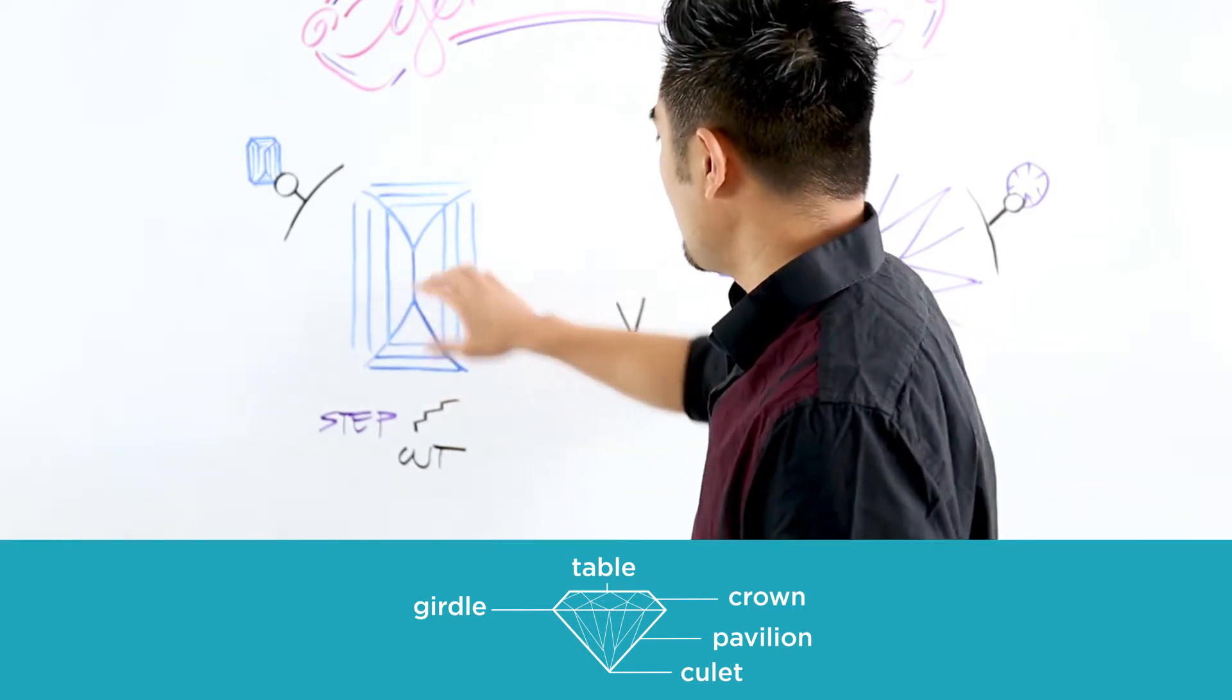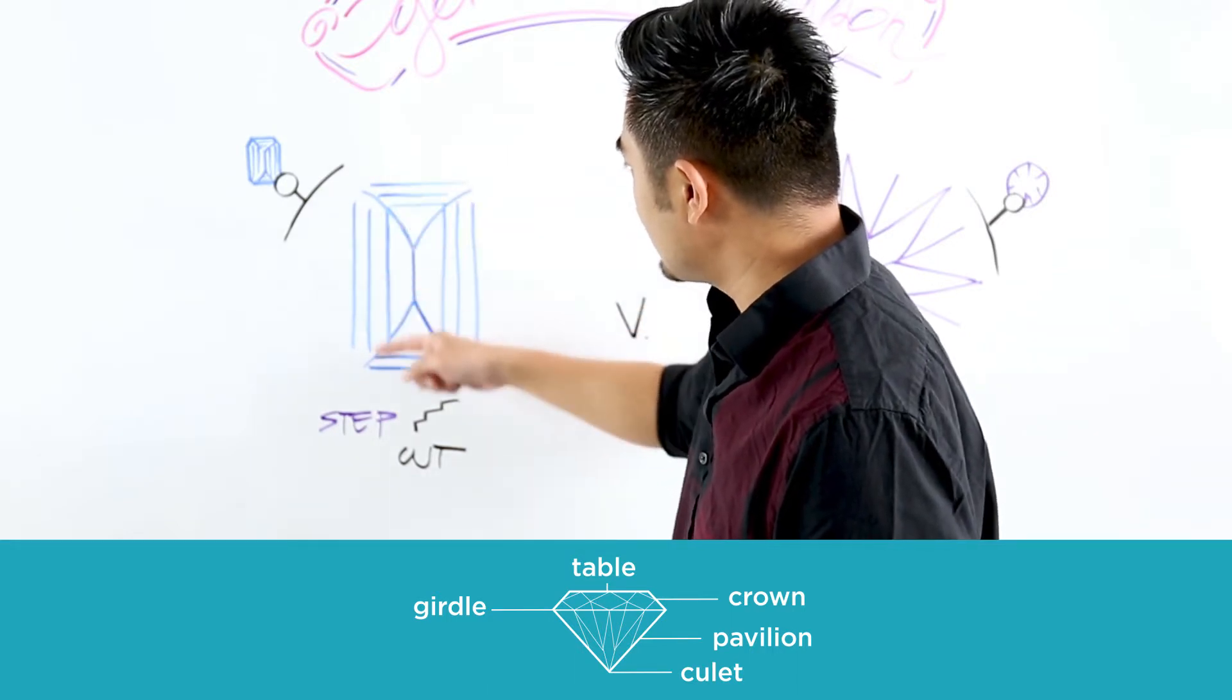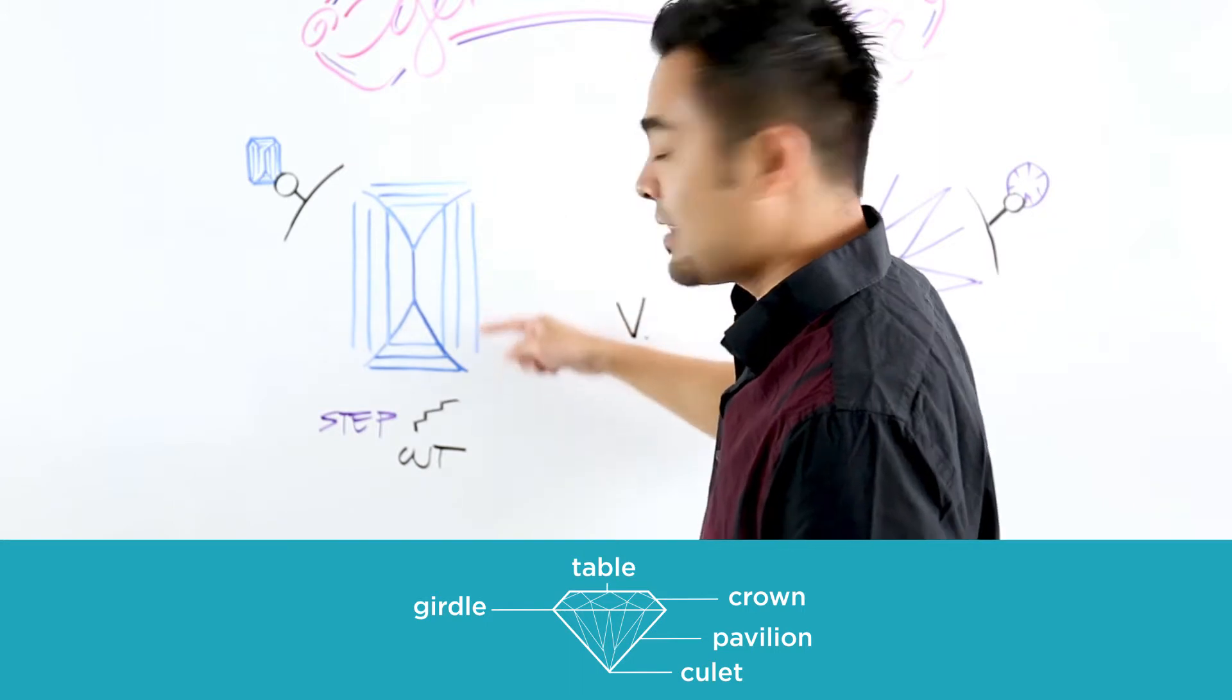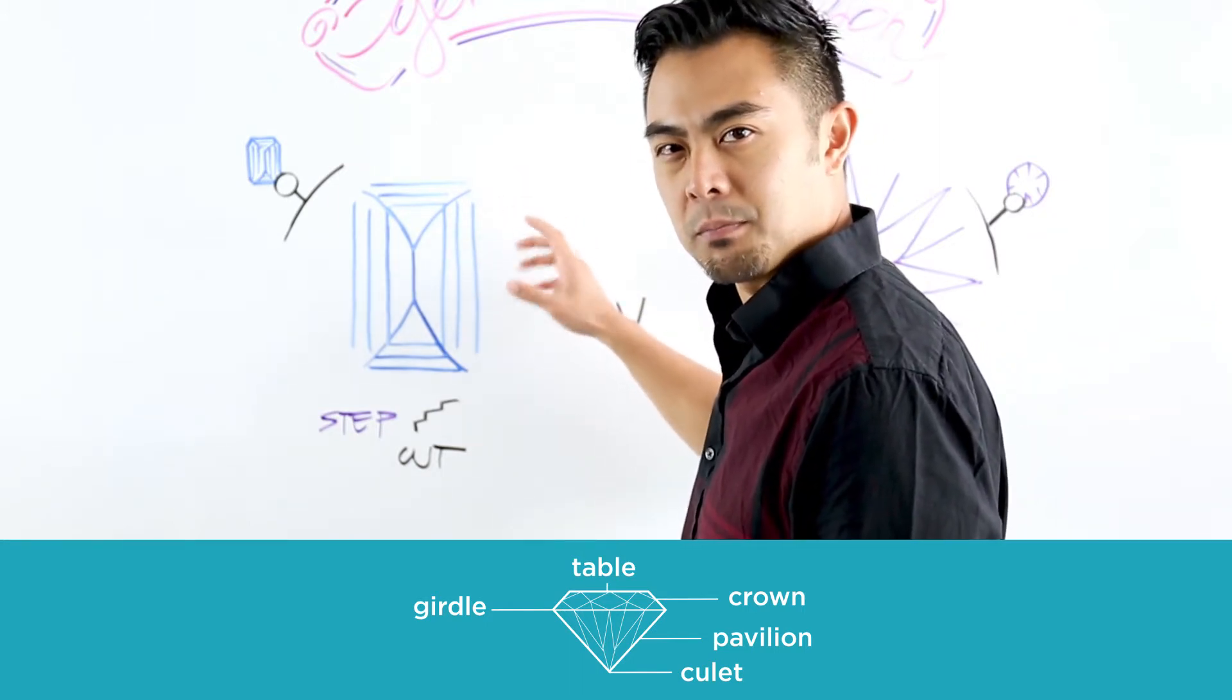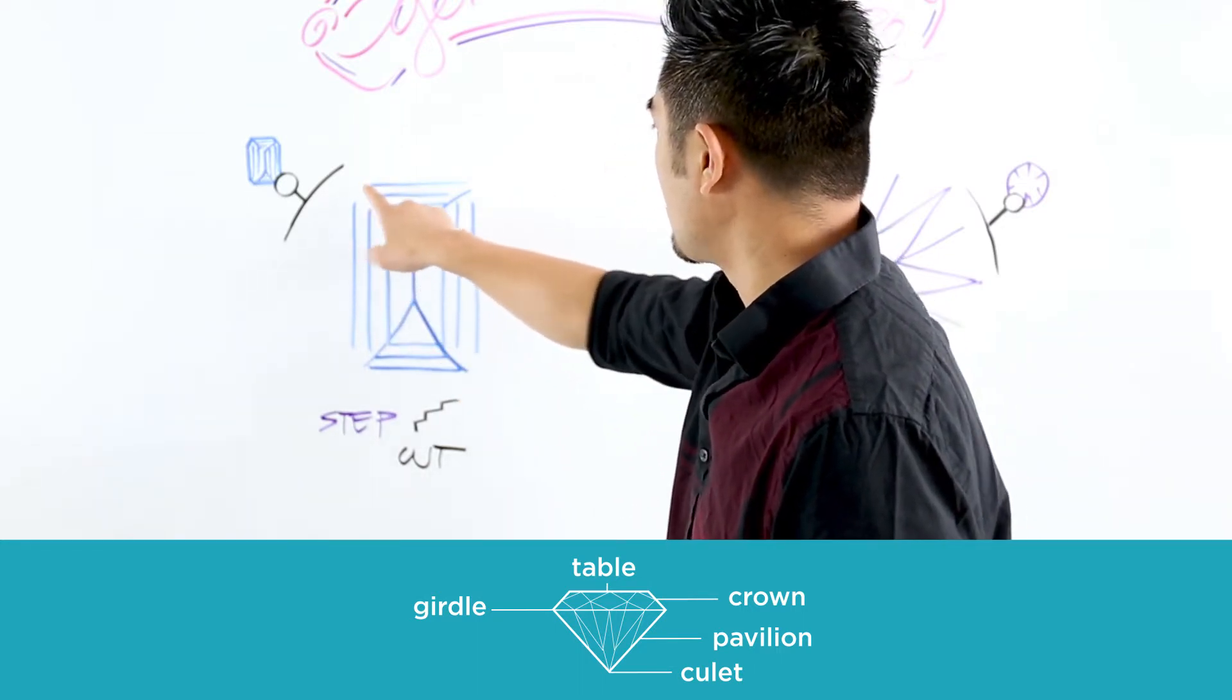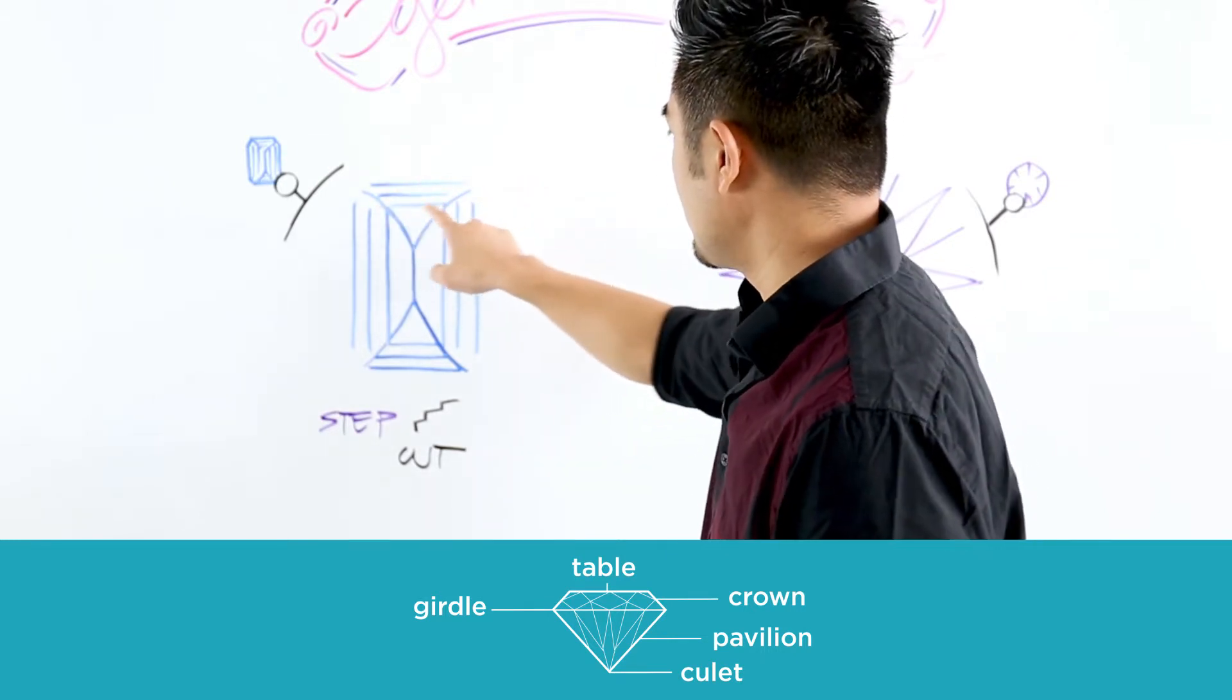So when a gemstone is faceted in a way where the facets are parallel to the girdle, that's called a step cut so it looks like a stairway or a lot of people will call it mirrors, very parallel mirrors. So if you notice here, if the girdle is horizontal then the facets are also horizontal.